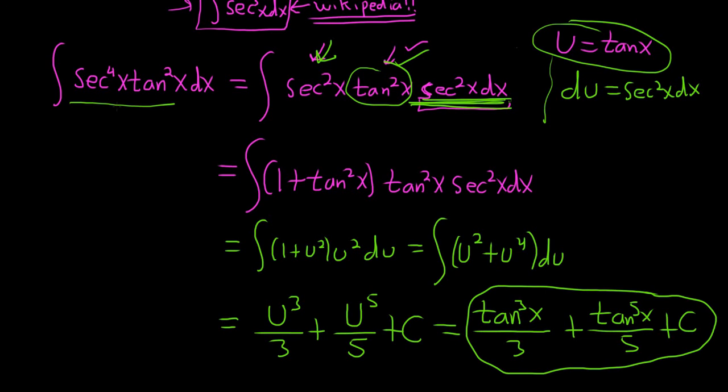What if we had secant to the fourth tangent cubed? Then you could have saved a secant tangent. When you have something like this, you can do it two different ways. You'll get two different answers that won't look the same, but they actually are. Sometimes you get integrals you can do multiple ways, and the answers are different but apparently they're equivalent.